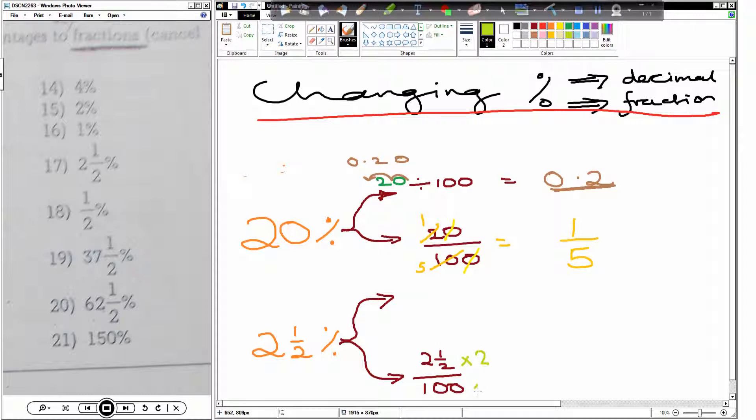What we do to the top, we do to the? Bottom. So two and a half times by two is? Five. So now the two and a half has become a whole number. Hundred times by two is? Two hundred. Okay, now, focus on the task.